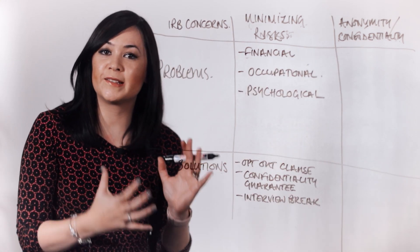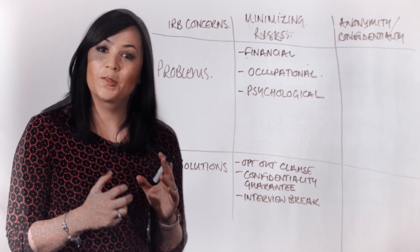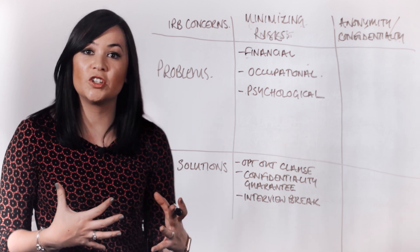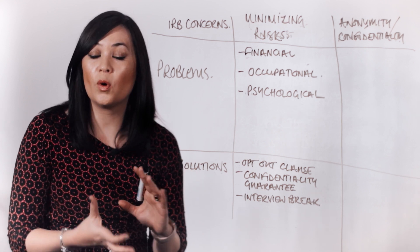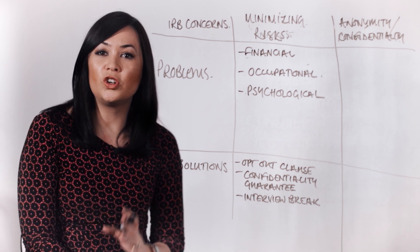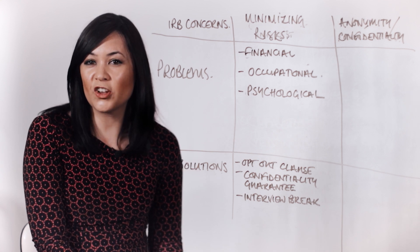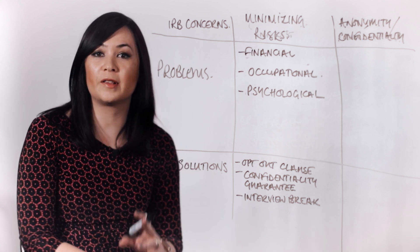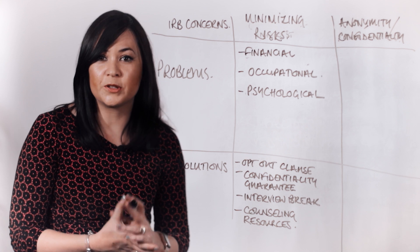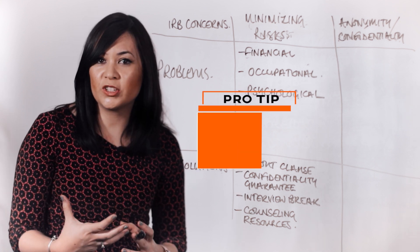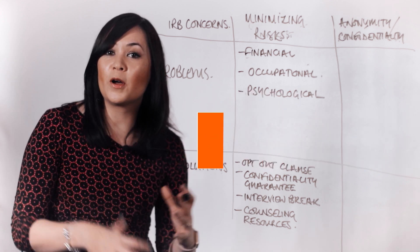In addition to the very standard opt-out clause and confidentiality guarantee, there's something called an interview break. Specifically, the researcher should be attuned to gestures or other non-verbal cues that signal distress, and when seeing them, offer the participant to stop or take a break. The researcher should not provide counselling services themselves, particularly not during the interview, but can provide the participant with one or more counselling resources to take advantage of. Finally, the researcher can offer to debrief with the participant after the interview, allowing them to ask questions so the researcher can share more information about the purpose of the study and other issues germane to participation.